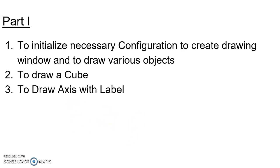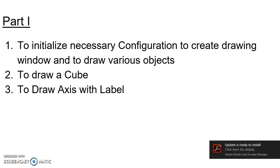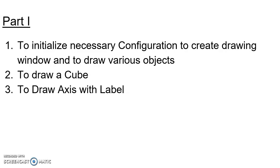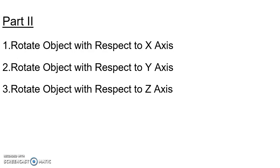I have divided this assignment into two parts. In the first part, we will see how to declare initial configuration needed to create a window. In the second step, we will see how to draw a 3D object, i.e. a cube. In the third stage, we will see how to draw X, Y and Z axis and how to give labels to the axis. In the second part, we will see how to rotate the 3D object with respect to X, Y and Z axis. In today's session, we will cover the first part of our assignment.